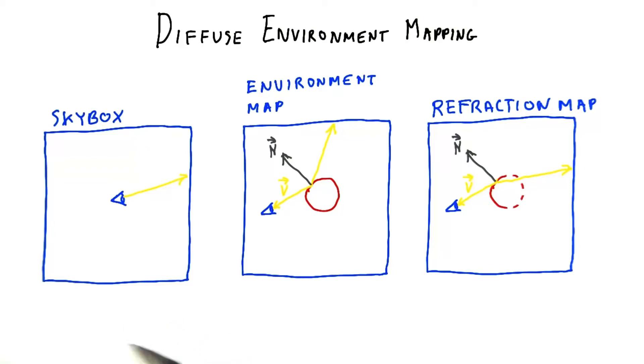We've used cube maps for skyboxes and environment maps for sharp and glossy reflections and for refraction. It turns out we can even use the same mechanism for diffuse lighting.